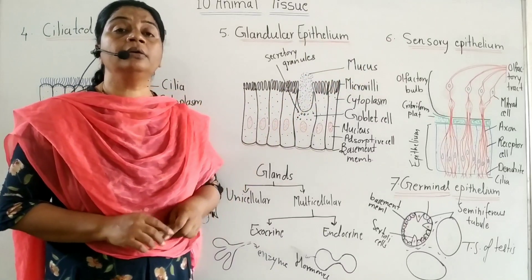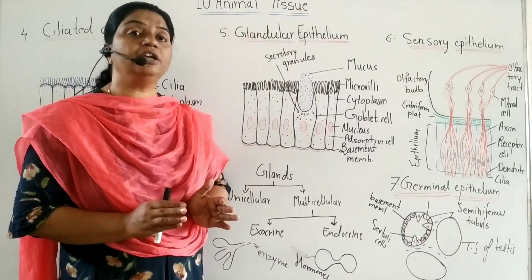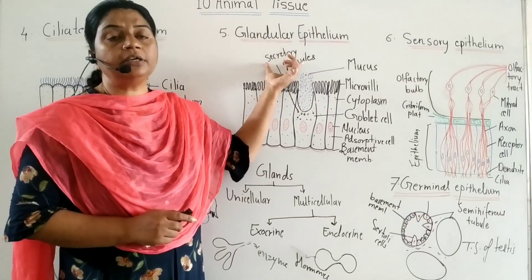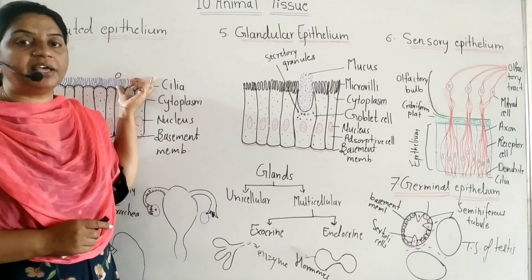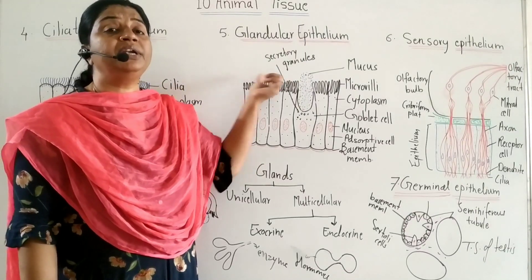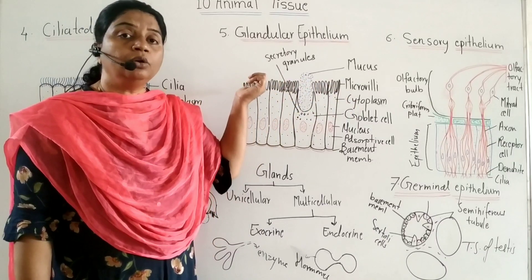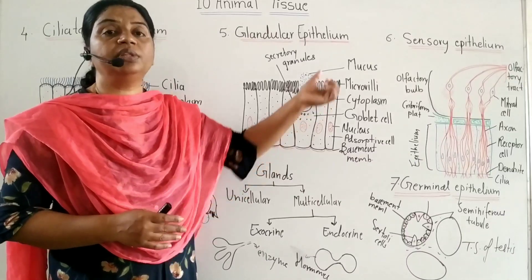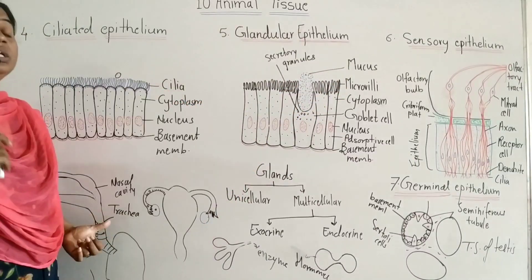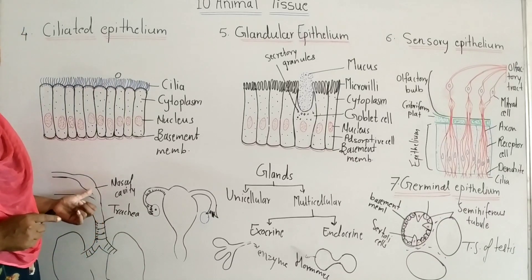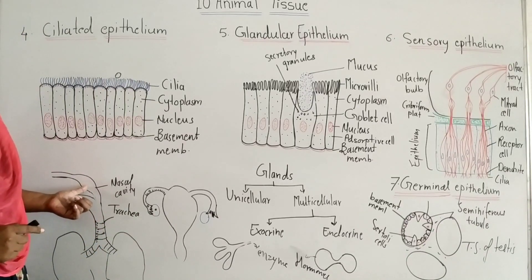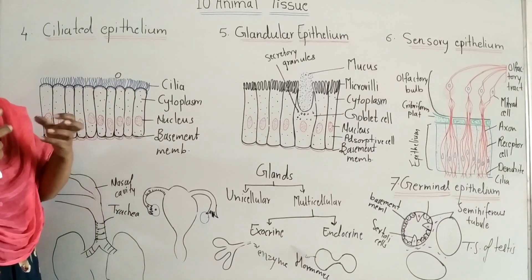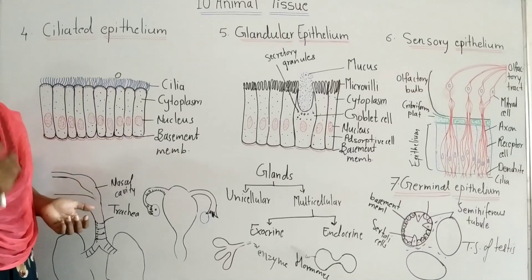The secretory granules produce secretion for a remarkable passage of the respiratory tract. Mucus lubricates the intestinal tract and the digestive tract, reducing friction. In the respiratory tract, mucus helps clean the passages. It traps foreign particles and dust particles.